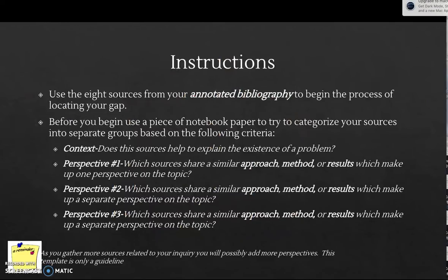So how do we go about doing this? We're going to take the eight sources from our annotated bibliography and start off with a piece of notebook paper. We're going to try to categorize our sources — or as we may have discussed before, sort the laundry. Which pile do the sources go into? On a piece of notebook paper, you want to sketch this out. I don't know what all of your categories would be, but I've given you a template of something you may want to consider.